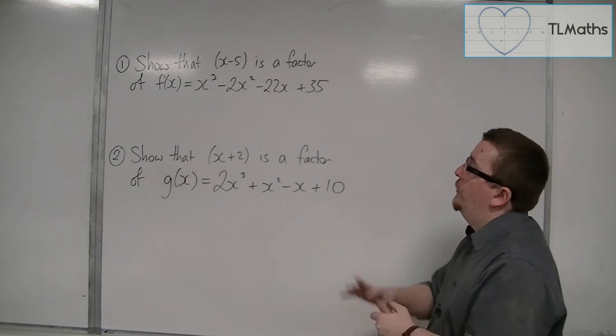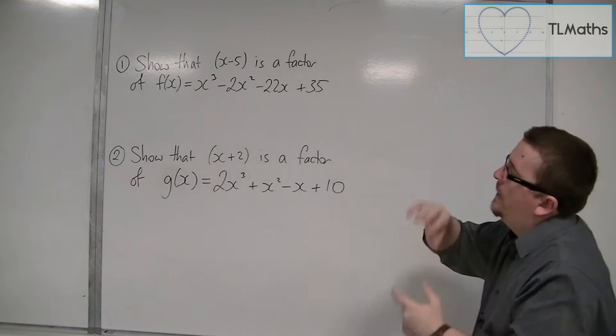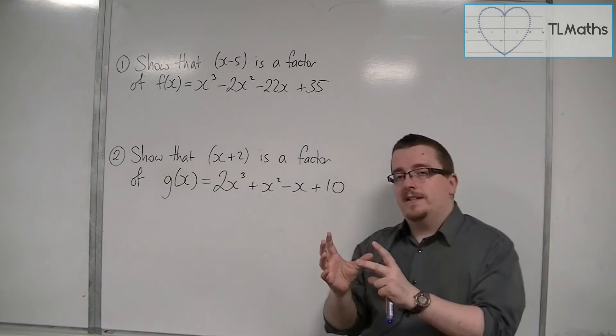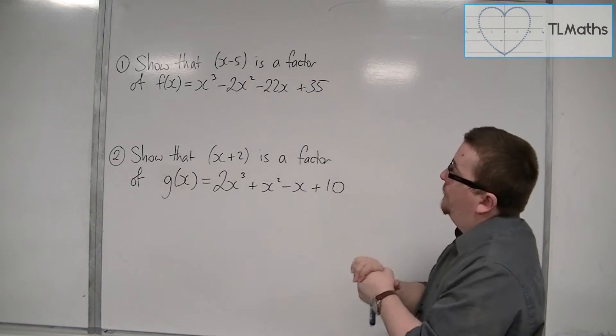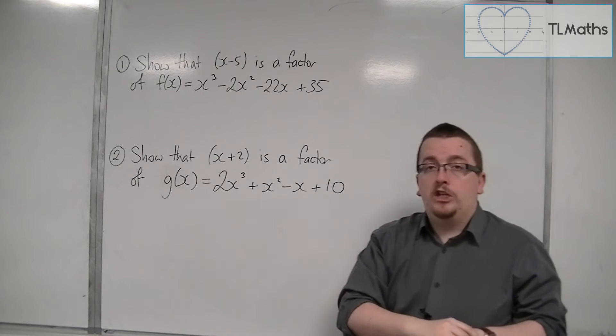So here's a couple of questions. Let's have a look at question one. Show that x minus 5 is a factor of f(x), where f(x) is given by this cubic polynomial here.